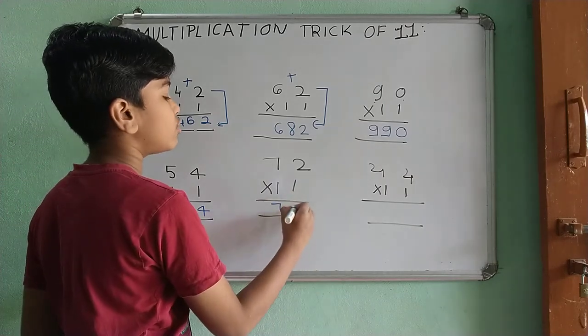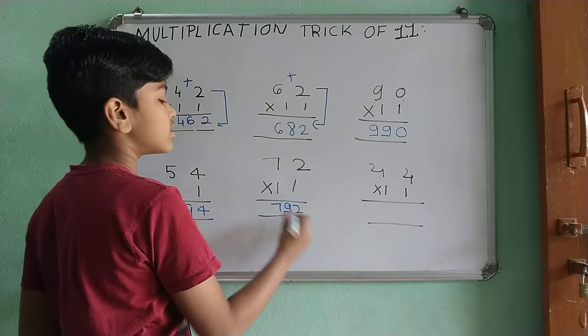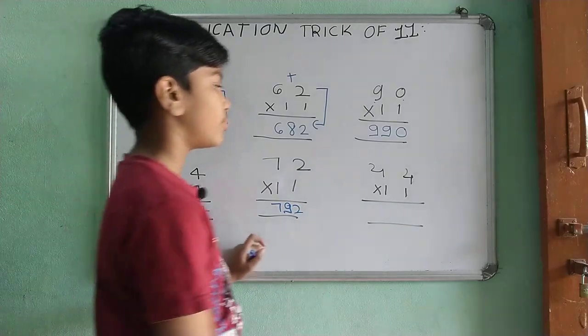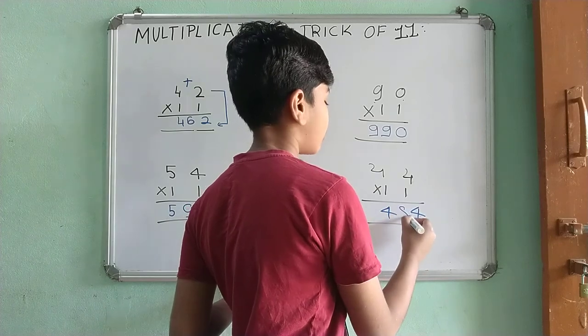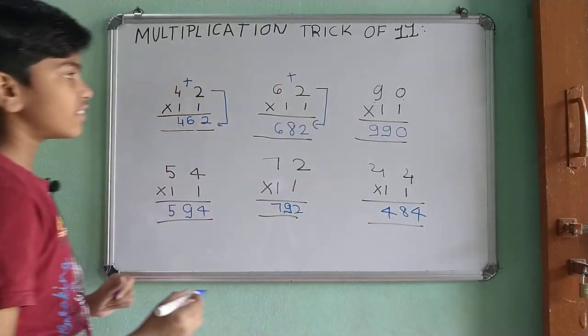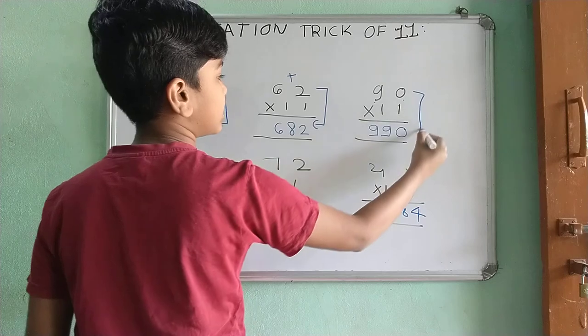Take 72 as it is. 7 plus 2 is 9. 792. 44 as it is. 4 plus 4, 8. And this way, you are going to get the answer.